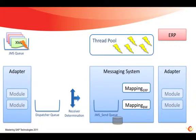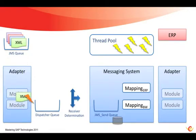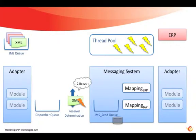First, the thread connects to a JMS queue and picks up one of those messages, runs them through any adapter modules, through the dispatcher queue, into the receiver determination where it executes the receiver conditions. In this case we assume we found two receivers.